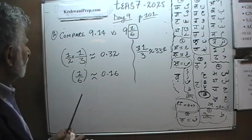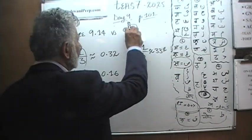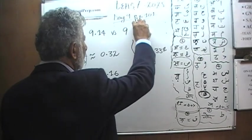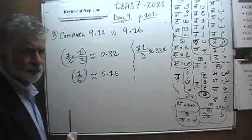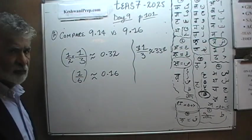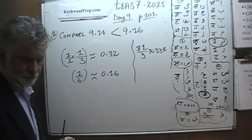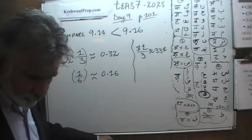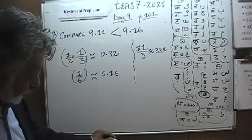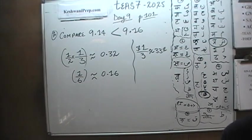We are done. We are being asked to compare 9.14 versus 9 and 16. Well, 9 and 16 we just found out is simply 9.16. Which one do you suppose is greater? Of course 9.16 is greater. That's all. We are done. I'll see you tomorrow, okay? Bye now.